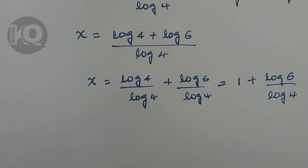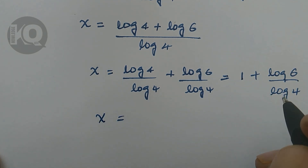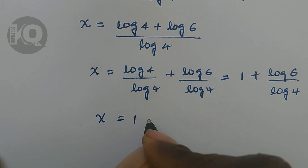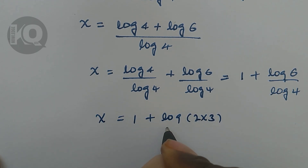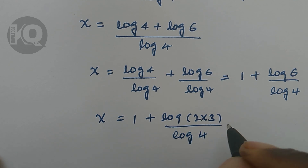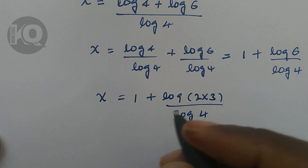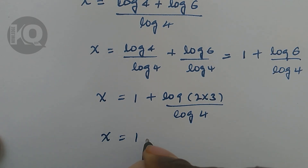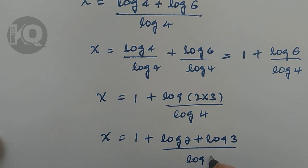Log 4 over log 4 simplifies to 1, so X equals 1 plus log 6 divided by log 4. Now we can write 6 as 2 times 3, so X equals 1 plus log of 2 times 3 divided by log 4. In a similar manner, we can write log of 2 times 3 as log 2 plus log 3, so X equals 1 plus log 2 plus log 3, divided by log 4.